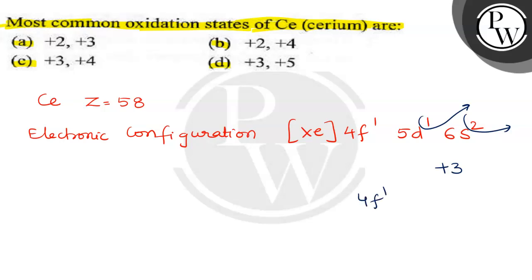If it loses all the electrons in the outermost shell and anti-penultimate shell - if it loses all these four electrons, this two, this one, and this one also - then it shows a +4 oxidation state.